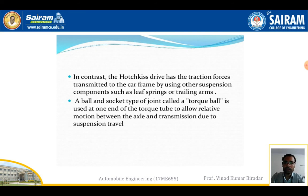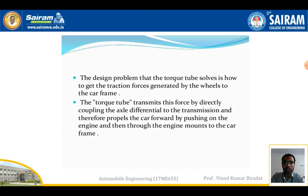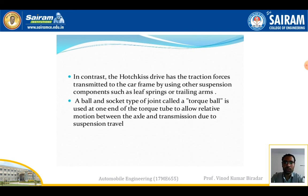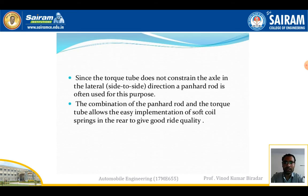In contrast, in the Hotchkiss drive, traction forces are transmitted to the car frame using other suspension components such as leaf springs or trailing arms. In the torque tube drive, the axle differential uses a ball-and-socket type joint called a torque ball at one end of the torque tube, to allow relative motion between the axle and transmission due to suspension travel.